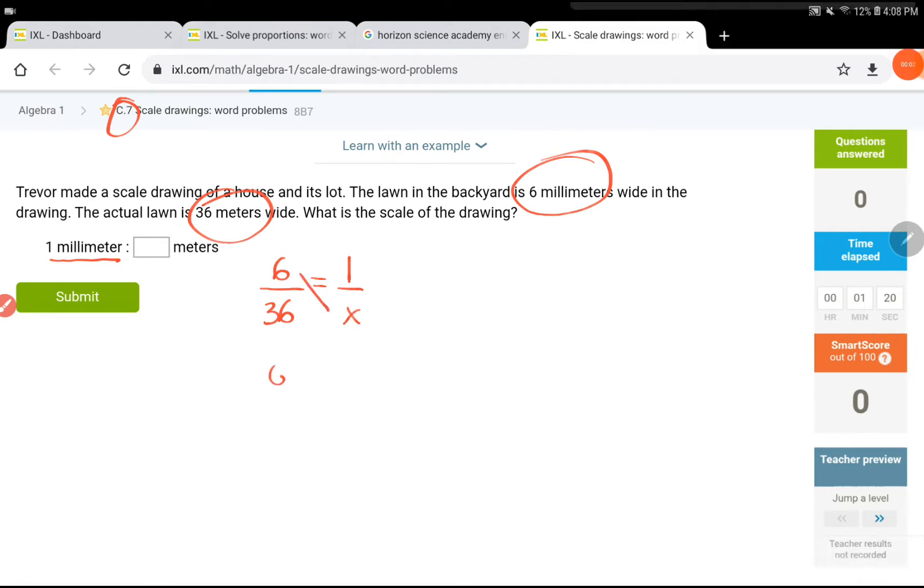Multiply 6 by X, it is 6X equals 36 times 1 is 36. Get the X by itself, divide each side by 6, so X would be equal to 6.